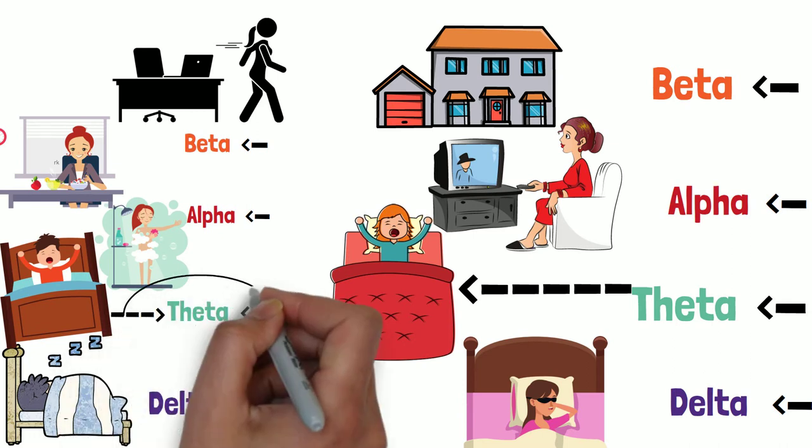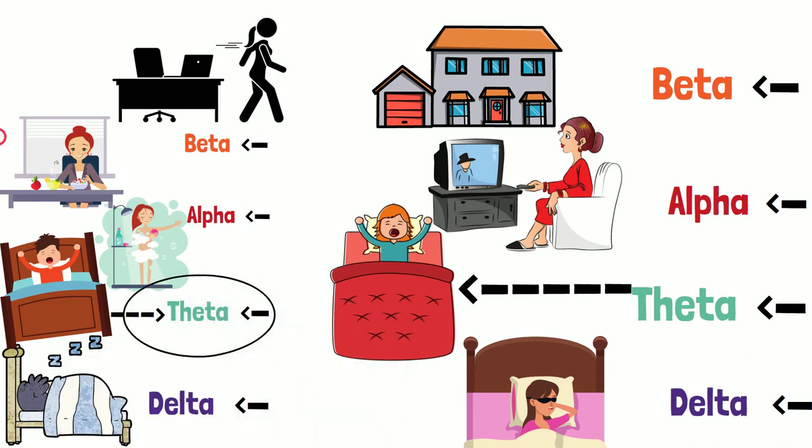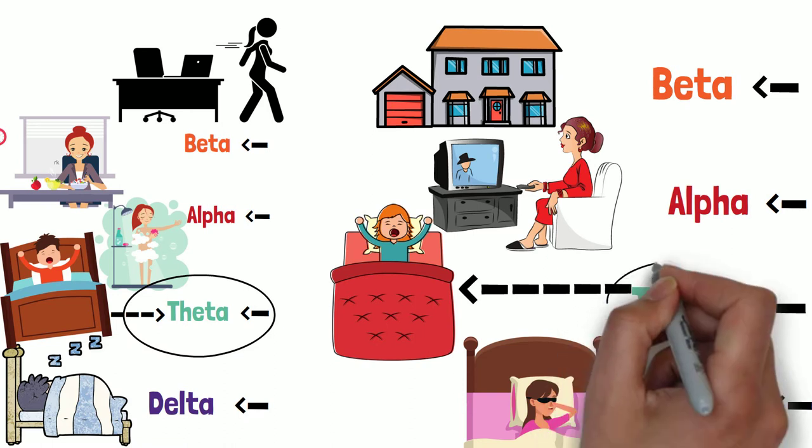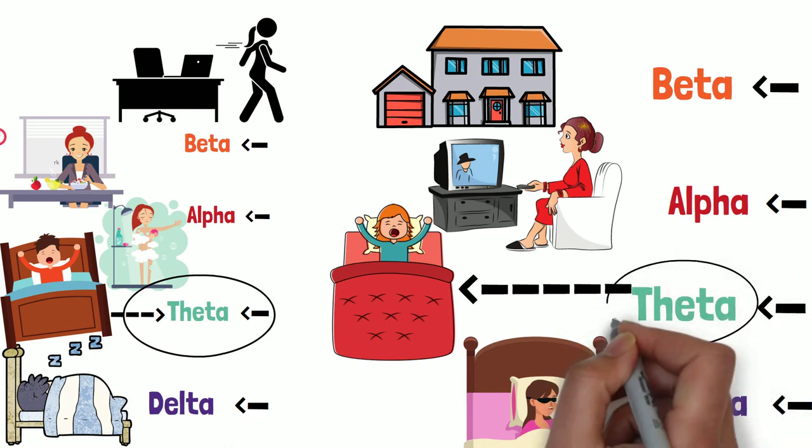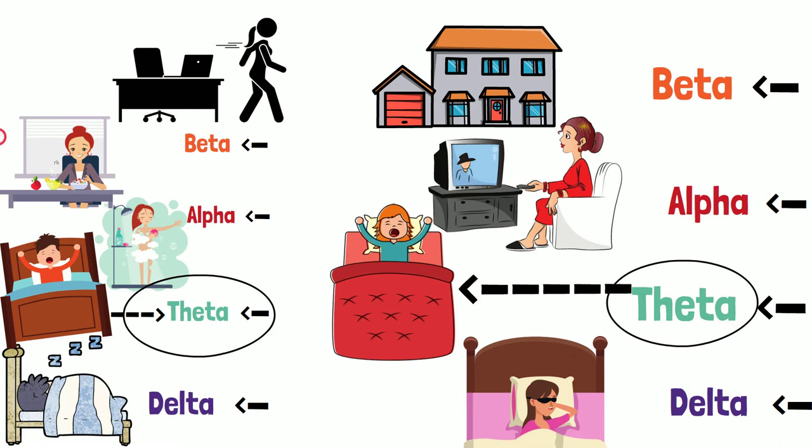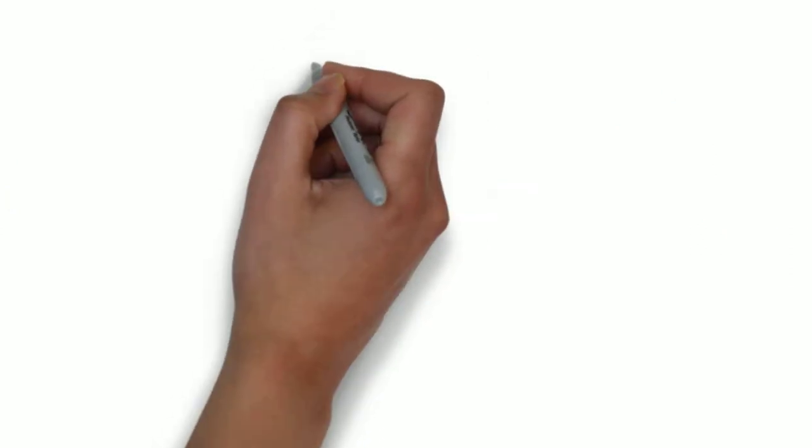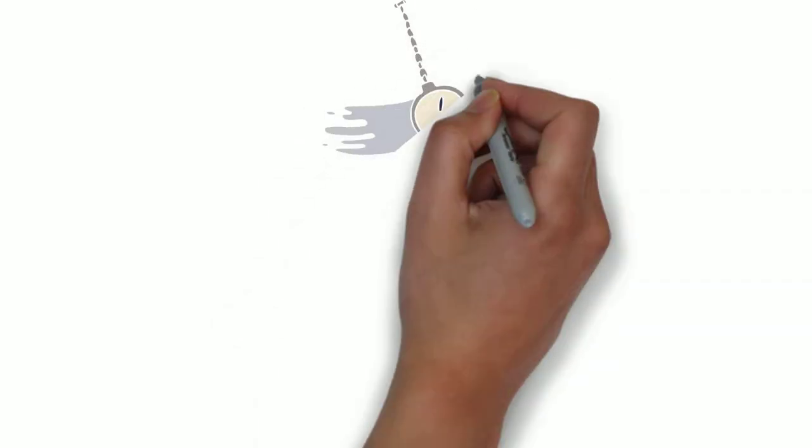So twice a day, your brain is engaged in theta. On the way in waking up, going from delta to higher vibrations, you pass through theta. On the way of going to sleep, you go from higher vibrations to delta and again pass through theta. So twice a day, your brain is in a state where it is in a state of hypnosis theta.